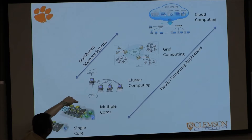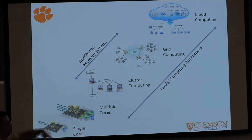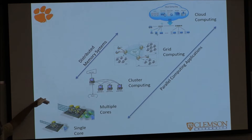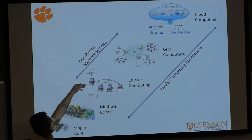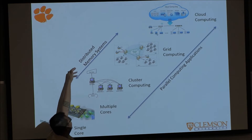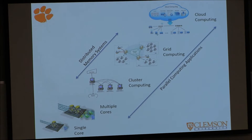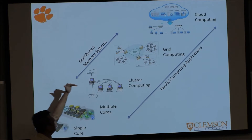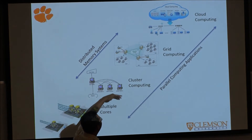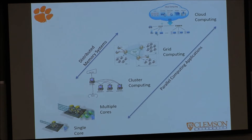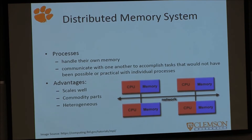Multiple cores within a single computer work with the same memory access — we call this shared memory computing. Anything involving multiple computers connected together is counted as a distributed memory system, and MPI is designed to support distributed memory systems. In a distributed memory system, each computing process handles its own memory and must communicate with others to complete tasks that would not otherwise be possible.